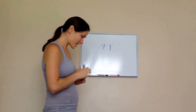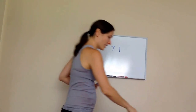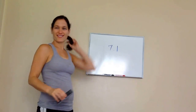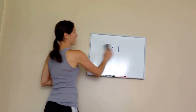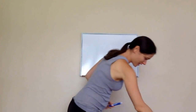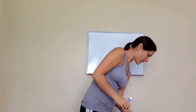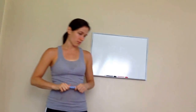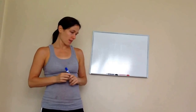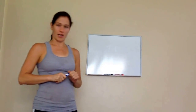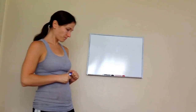This is lesson 1.7.3, and this one is on arithmetic with whole numbers and money, and then also with variables and evaluation.